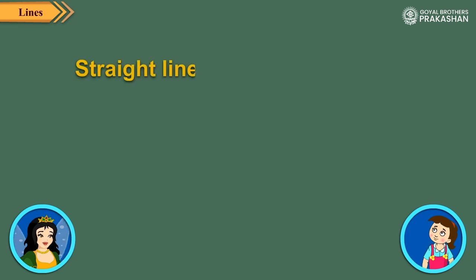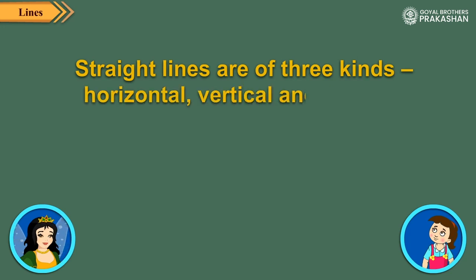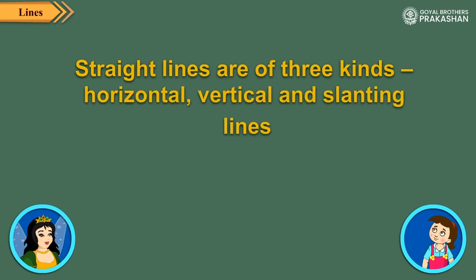Straight lines are of three kinds: horizontal, vertical, and slanting lines.